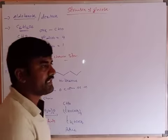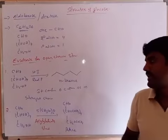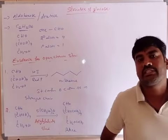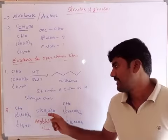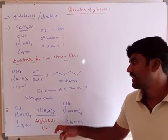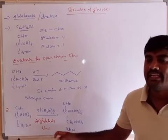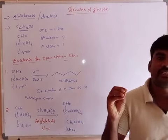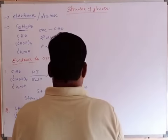Acetylation of glucose confirms that five OH groups are present in the open chain structure of glucose. The five OH groups are replaced by acetate groups to form penta-acetate glucose, which indicates that five OH groups are present in the glucose structure.